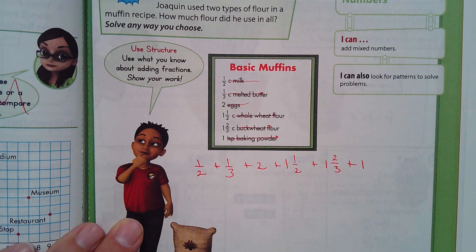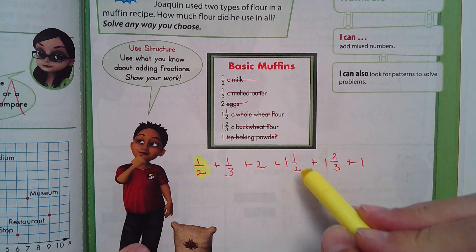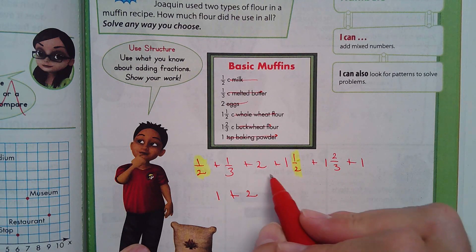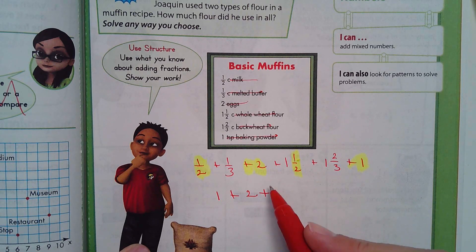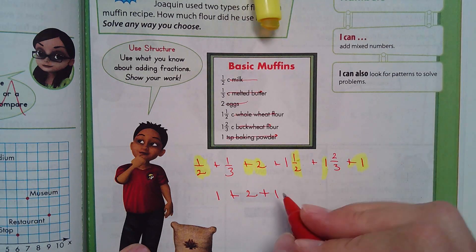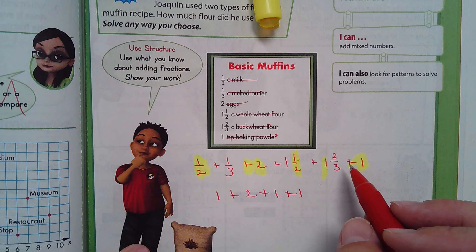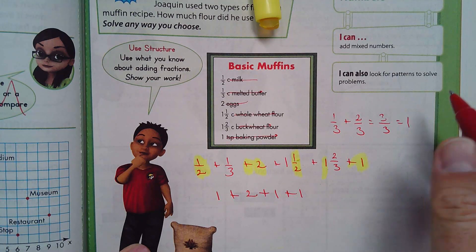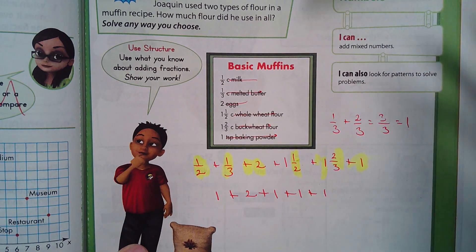The first thing you want to do is look and see if there's some that would be easy to add together. I see there's a half right there and there's another half — half plus a half is one. So I put down one, plus there's a two, plus another one. What fractions are left? There's another one. One third plus two thirds is three thirds, which equals one.